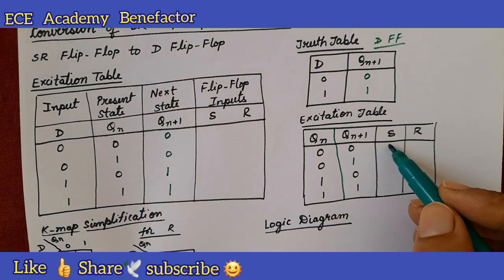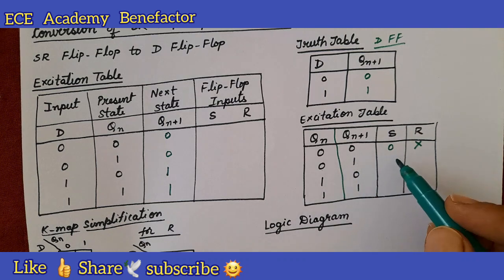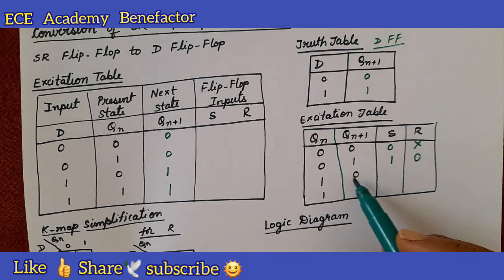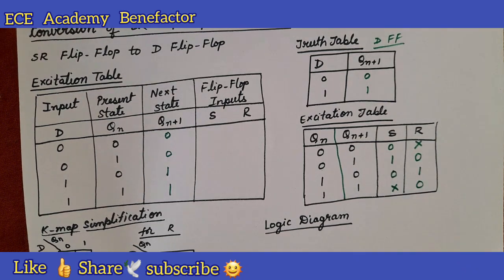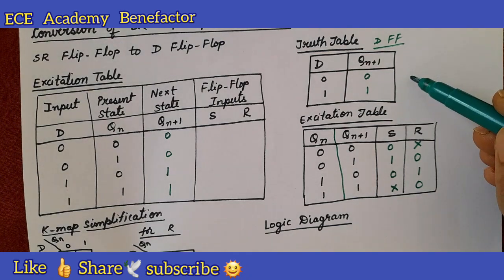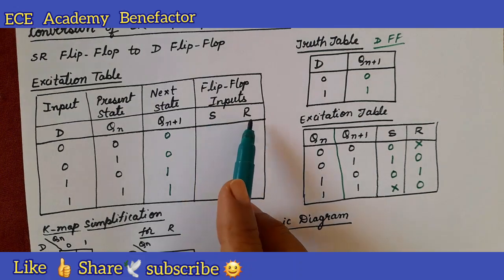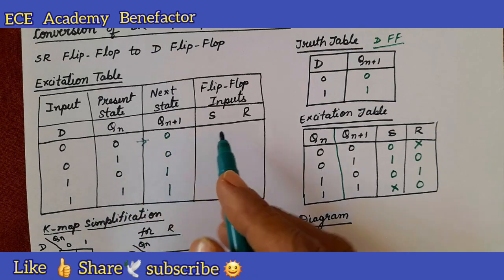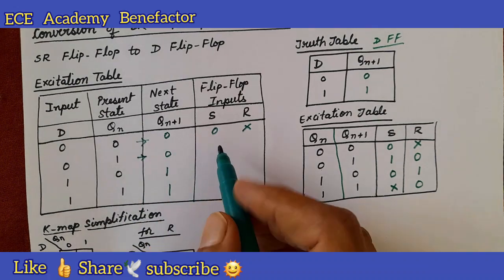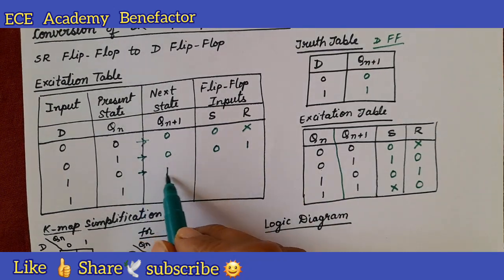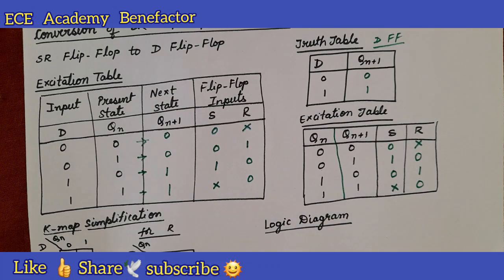For the SR excitation table: when Q_n=0 and Q_{n+1}=0, S=0 and R=x; when Q_n=0 and Q_{n+1}=1, S=1 and R=0; when Q_n=1 and Q_{n+1}=0, S=0 and R=1; when Q_n=1 and Q_{n+1}=1, S=x and R=0. Using this, we fill the flip flop inputs S and R in our excitation table. We have now completed the excitation table.